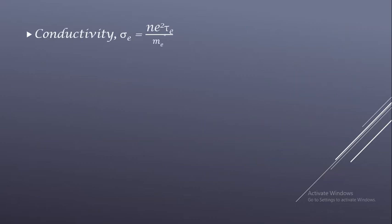We also have the conductivity equation sigma_e = n·e²·τe / me*. And since mu_e = e·τe / me*, we can substitute the mobility equation into the conductivity equation. When we do so, we get electrical conductivity sigma_e = n·e·mu_e. This is the equation for electrical conductivity in terms of mobility. If we know the carrier concentration and mobility, we can easily find the conductivity.